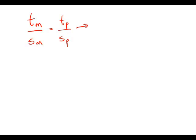So I'm going to rewrite this expression. I'm going to multiply both sides by students in P. So I've got students in P times teachers in M over students in M equals teachers in P.